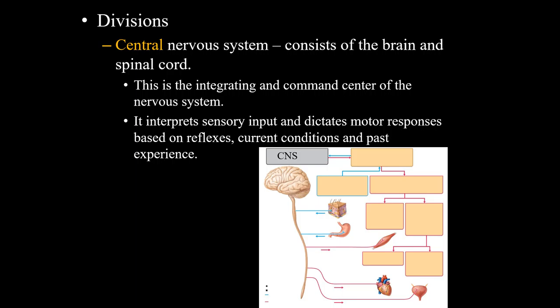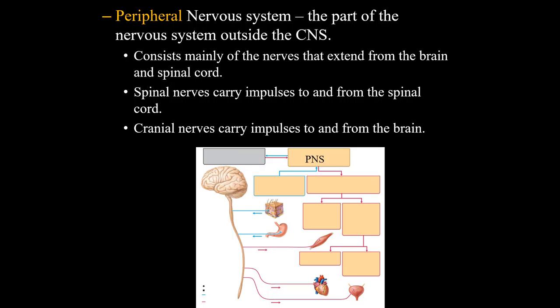Communicating with the central nervous system, you have the peripheral nervous system, where the cranial nerves and spinal nerves fit in. The peripheral nervous system is a two-way channel - it sends information up to the central nervous system, and it takes information from the central nervous system and sends it out to the motor output. It's like a two-lane highway. PNS is the abbreviation for that, although I usually call it the peripheral nervous system.